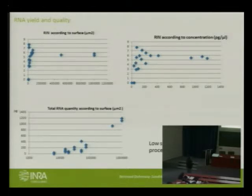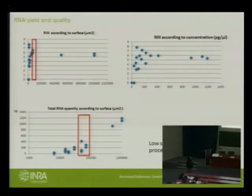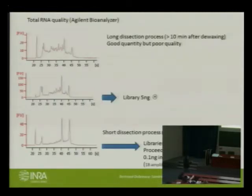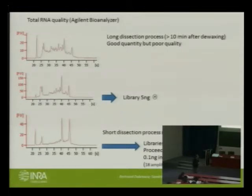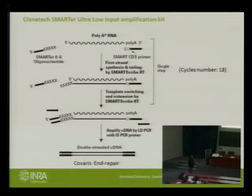We need to increase speed and increase sensitivity. Our running conditions are more or less 40,000 square micrometers, which produces more or less 0.4 nanograms of total RNA. With those conditions, we got nice quality and processed an experiment. We made one single micro-dissection producing more or less 7 nanograms of total RNA, and we performed libraries with 5, 1, 0.5, and 0.1 nanograms of total input RNA with 18 amplification cycles, which is rather low for plant samples. We used the SMART-seq Clontech kit.